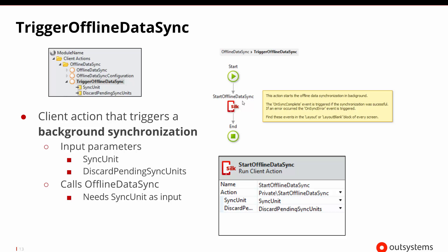What does trigger offline data sync look like inside our on-click client action? All it does is start an offline data sync, which comes from that Silk UI private block. The note says this is going to start an offline data synchronization that will occur in the background, triggering events — the start will already have been triggered, the complete will get triggered if it works out, and if it doesn't, we'll get an error. All of these events are available because we are using the layout or layout blank in our screen.